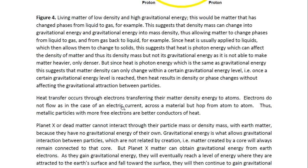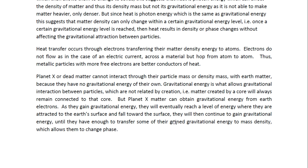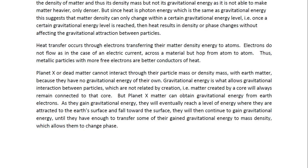Heat transfer occurs through electrons transferring their matter density energy to atoms. Electrons do not flow as in the case of an electric current across a material, but hop from atom to atom. Thus metallic particles with more free electrons are better conductors of heat. Planet X or dead matter cannot interact through their particle mass or density mass with Earth matter, because they have no gravitational energy of their own. Gravitational energy is thus what allows gravitational interaction between particles which are not related by creation — matter created by a core will always remain connected to that core. But Planet X matter can obtain gravitational energy from Earth electrons. As they gain gravitational energy, they will eventually reach a level where they are attracted to the Earth's surface and fall toward the surface. They will then continue to gain gravitational energy until they have enough to transfer some of their gained gravitational energy to mass density, which allows them to change phase.